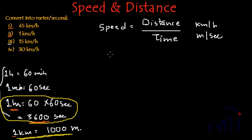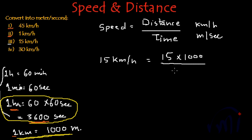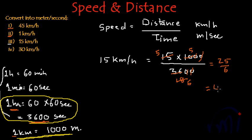The third problem is converting 15 kilometers per hour to meters per second. So 15 kilometers converted into meters requires multiplying by 1000, and since it is in 1 hour that is 3600 seconds, we divide by 3600. Simplifying: the zeros cancel, and we get 15 multiplied by 5/18, which equals 75/18, simplifying to 25/6 meters per second.